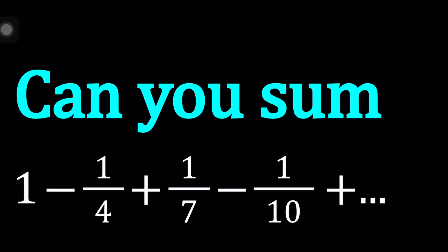We have 1 minus 1 over 4 plus 1 over 7 minus 1 over 10 plus 1 over 13, so on and so forth. And this goes on forever, where the denominators are going up by 3.